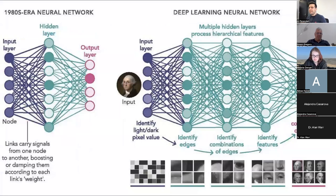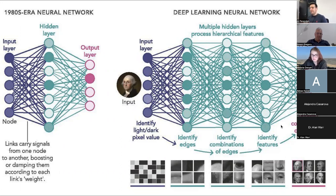In a deep neural network, as the input image goes through the network, it starts to identify edges. When you combine these edges together as you go through the network, you start to identify features and more complex patterns. We call this encoding — you encode the image into the network, and then the network uses that encoding to map the input to an output.